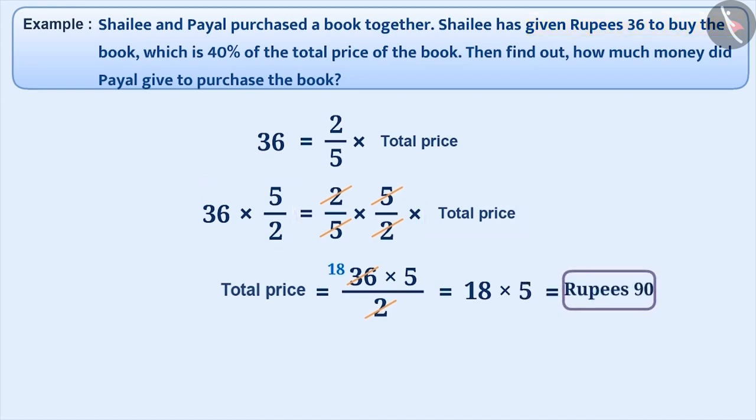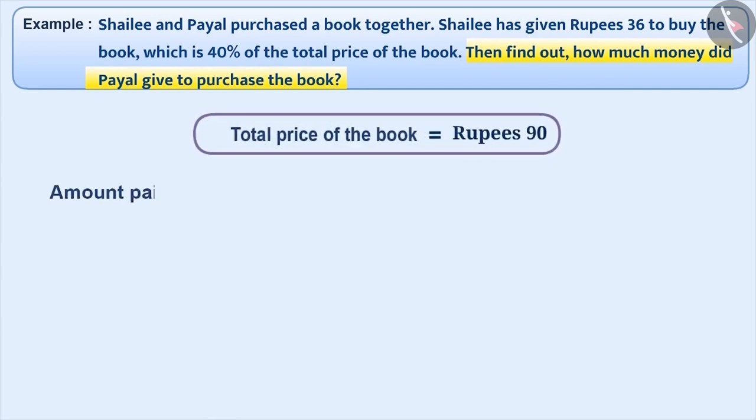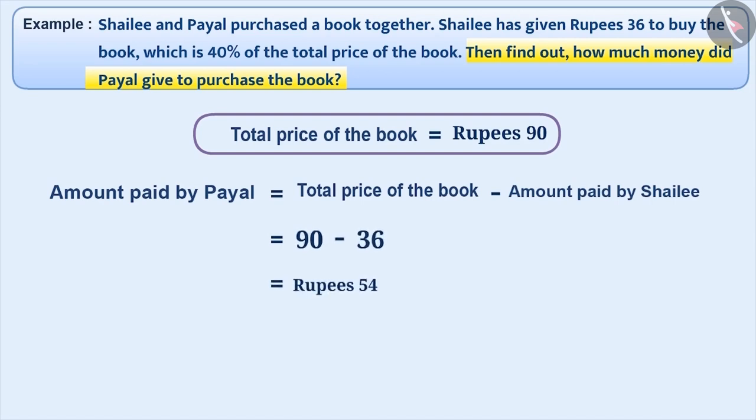Is this the answer to the given question? No. We need to find out the amount paid by Payal. We can find this in the following way. Amount paid by Payal is equal to total price of the book minus amount paid by Shailee, which is equal to 90 minus 36, which is 54. Therefore, Payal has given Rupees 54.